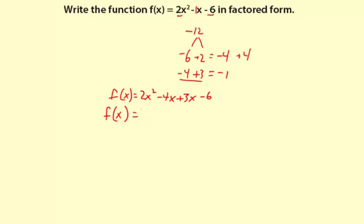For this first term, I can see there's a 2x in common, so I'll factor that out. That'll leave an x for the first part, and then a negative 2 for the second part. Because 2x times x makes 2x squared, and 2x times negative 2 makes negative 4x.